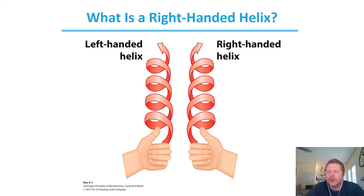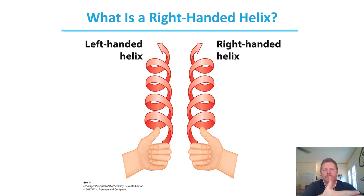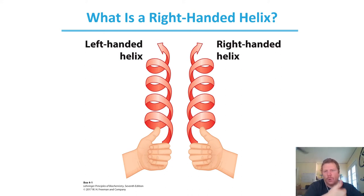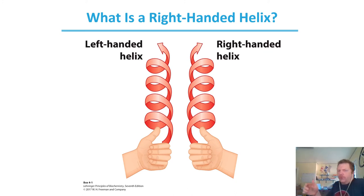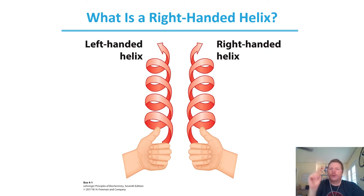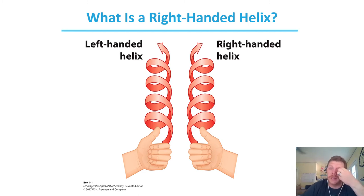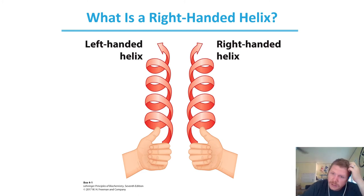When you think about a right-handed helix, what people generally do is look at their thumb and how it folds in. It's going to be rotating toward your thumb, and then coiling upward. That constitutes a right-handed helix compared to a left-handed helix.